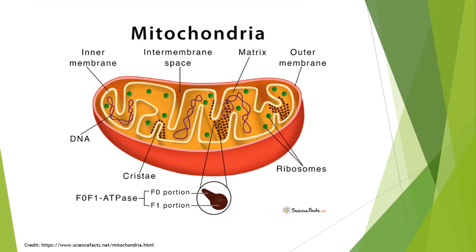Here we can see the structural components of mitochondria. The outermost layer is known as the outer membrane and the innermost layer is known as the inner membrane. The space between the outer membrane and inner membrane is called the intermembrane space. The inner membrane is compartmentalized into numerous folds called cristae, which surround the matrix. The mitochondria also contain ribosomes, DNA and F0-F1-ATPase.